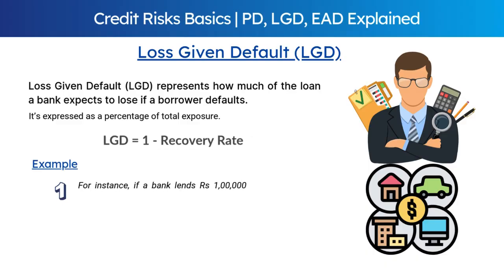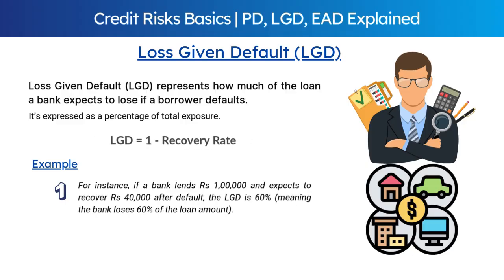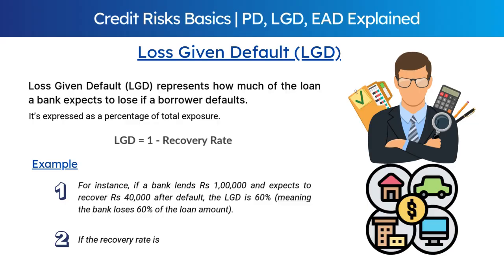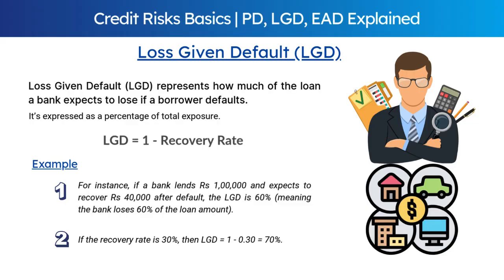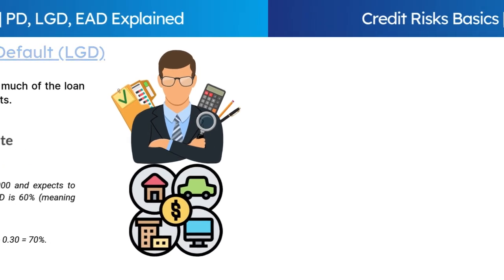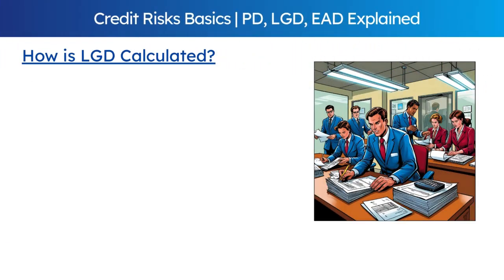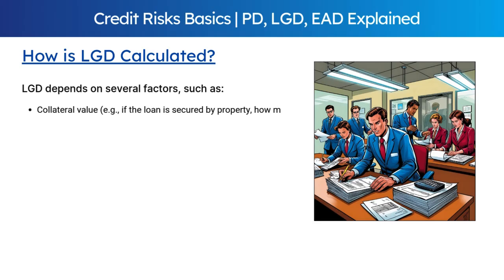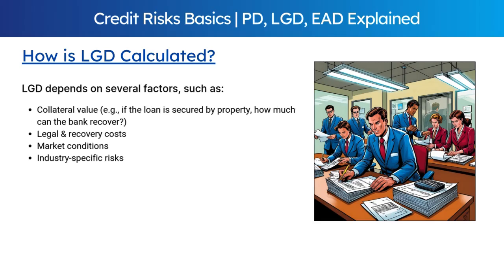For instance, if a bank lends Rs. 1 lakh and expects to recover Rs. 40,000 after default, then LGD is 60%, meaning the bank loses 60% of the total amount. For another example, if the recovery rate is 30%, then LGD equals 1 minus 30%, which comes out to 70%. LGD depends on several factors such as collateral value, legal and recovery costs, market conditions, and industry-specific risk.